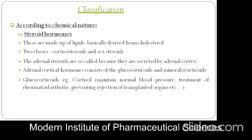The first classification is according to chemical nature. The first type is steroid hormones. Steroid hormones are generally secreted by the adrenal glands, found in the upper part of the kidney. They are made of lipids, basically derived from cholesterol. There are two classes: corticosteroids and sex steroids. The adrenal steroids are secreted by the adrenal cortex. Adrenal cortical hormones consist of glucocorticoids and mineralocorticoids.